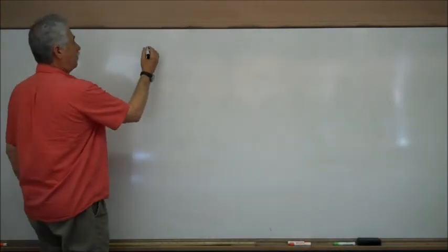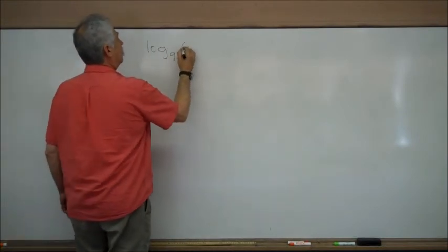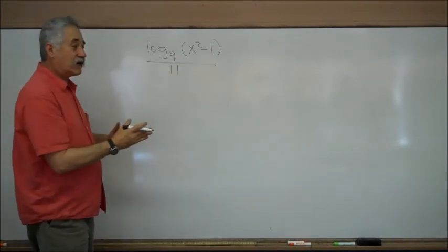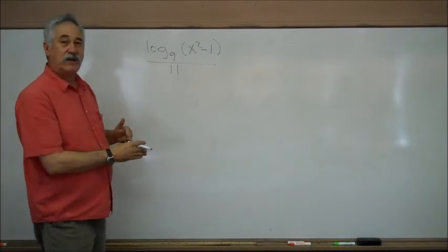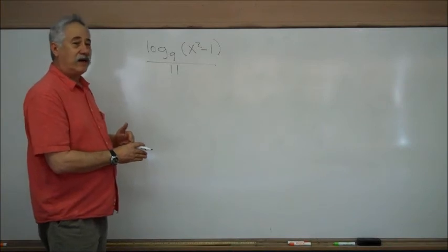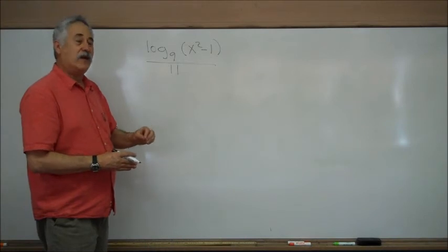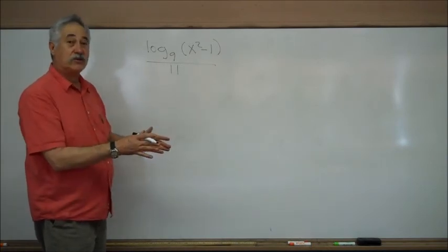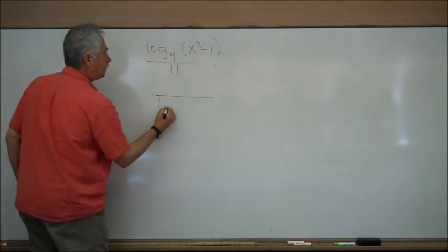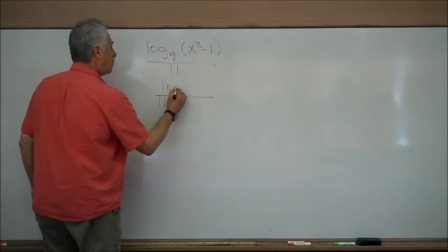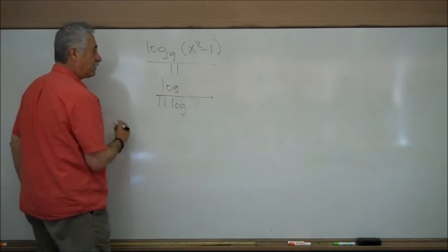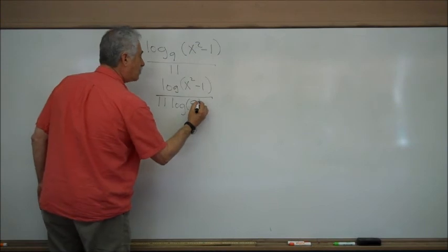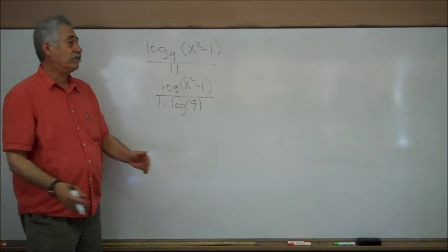Another tough-looking example: logarithm base 9 of the quantity (x squared minus 1) over 11. There's a basic rule — when you're dividing and dividing again, you use the same denominator. When two expressions share the same denominator space, you multiply them. Keep the 11 in the denominator, follow the rule: fraction bar, logarithm up top, logarithm down below — same fraction bar, don't create a new one. X squared minus 1 goes in the numerator with parentheses; 9 stays in the denominator. You're finished.